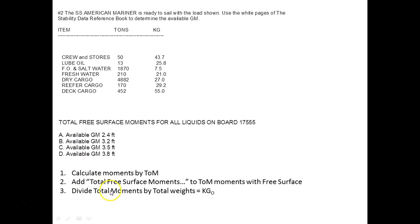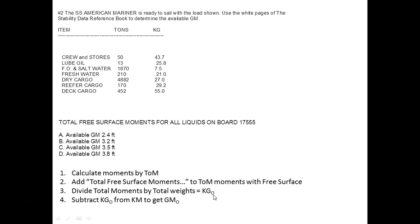After we do that, we're going to divide the total moments by the total weights, and that is going to give us the KG of the vessel — the KG accounting for the effect of free surface. That's why this O is here. Anytime you see an O, that is an internationally agreed-upon symbol saying we have taken into account free surface. After we do that, to get GM we're going to subtract our KGO from KM, which means we'll have to go into our hydrostatic tables to get that number, and that will give us our GM with free surface accounted for.